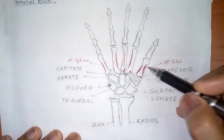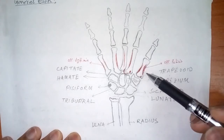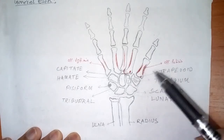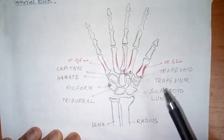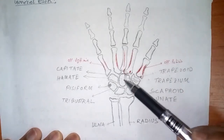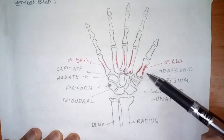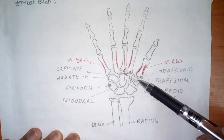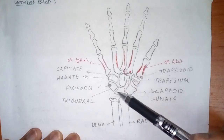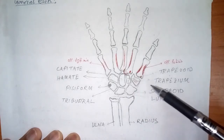The first metacarpal bone does not articulate with any of the other metacarpal bones, and it also does not articulate with any of the carpal bones except the trapezium.